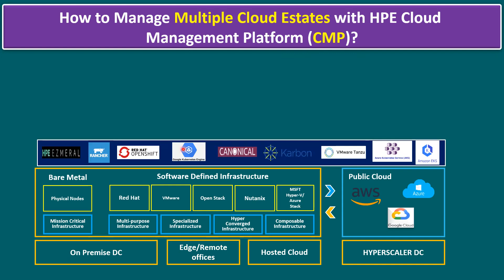These Kubernetes options vary by customer environment. Some use HPE Ezmeral, some use Red Hat OpenShift. If running workloads on Google Cloud, they may use Google Kubernetes Engine. For OpenStack environments, Canonical Charmed Kubernetes is an option. For Nutanix, there is Nutanix Karbon. For VMware VCF, customers prefer VMware Tanzu. For Azure Stack HCI integrated with Azure cloud, the option is Azure Kubernetes Service (AKS). For AWS integration, customers use Amazon Elastic Kubernetes Service (EKS).